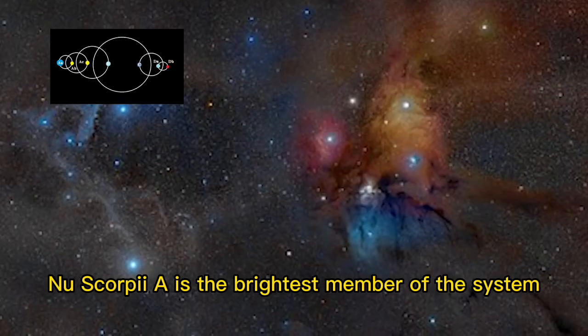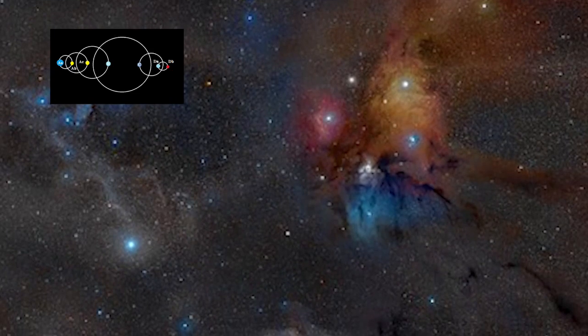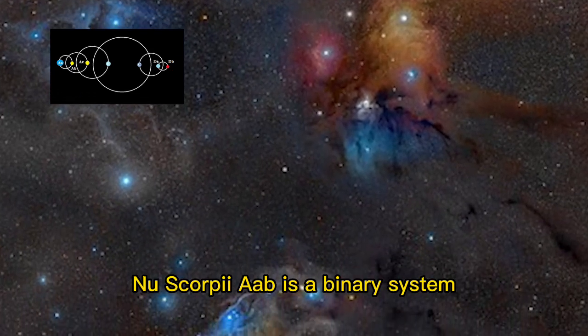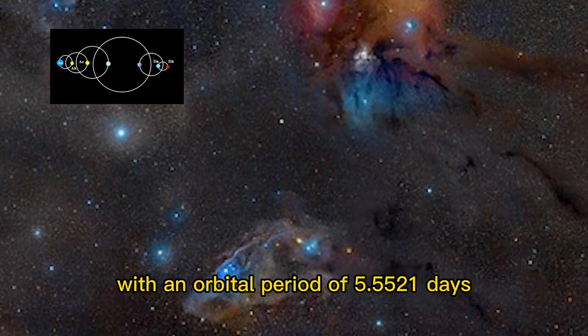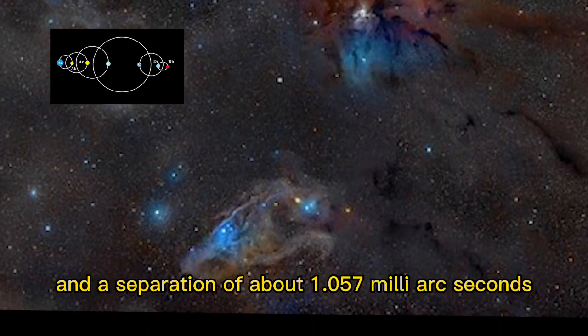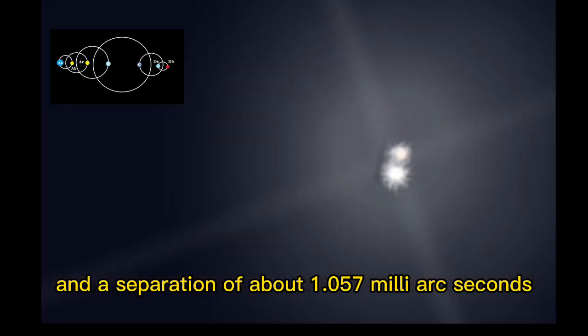Nu Scorpii A is the brightest member of the system. Nu Scorpii Ab is a binary system with an orbital period of 5.5521 days and a separation of about 1.057 milliarcseconds.